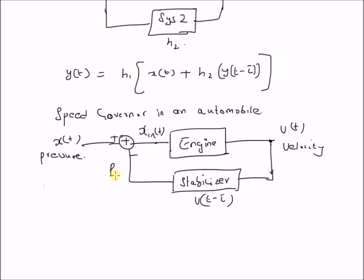So this is a pressure that is stabilized, that acts as a stabilizing factor on the input x of t. That is, x of t minus p_s of t gives us x_in of t. And this pressure will always produce a velocity v of t which is within reasonable limits, for example, within the speed limits.